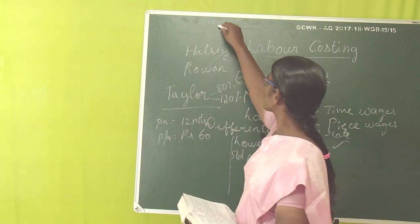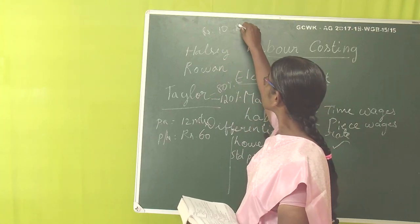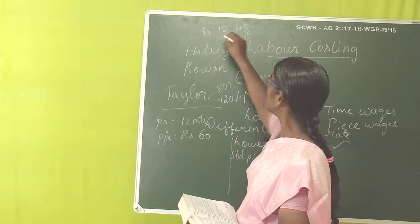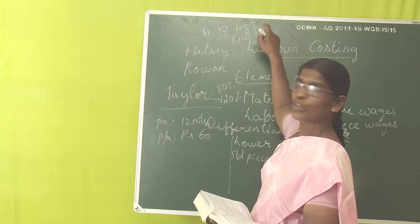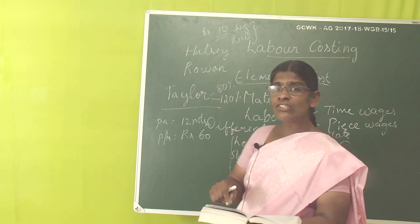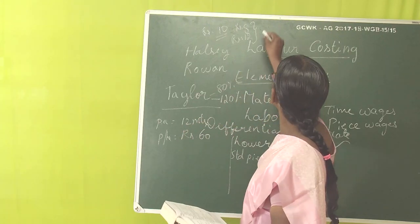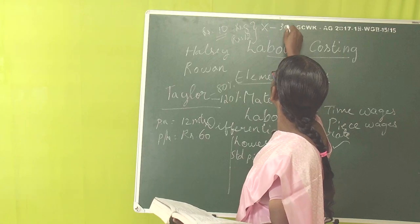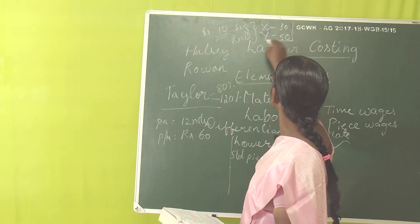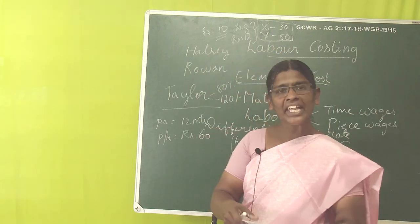So we have two different piece rates — one for certain workers and another for others. In this problem, in a particular day of 8 hours, worker X produced 30 units and worker Y produced 50 units. We now need to determine whether each worker is below standard or above standard.